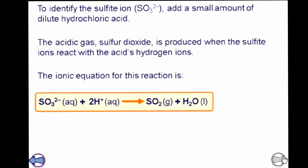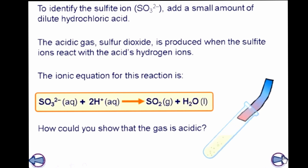You should also know the ionic equation. To confirm it's an acidic gas, use litmus solution or litmus paper — for acid, blue litmus turns red. For confirmation of sulphur dioxide, the filter paper soaked in potassium manganate (VII) turns from purple to colorless. So when sulphite is present and dilute hydrochloric acid is added, sulphur dioxide gas comes out.